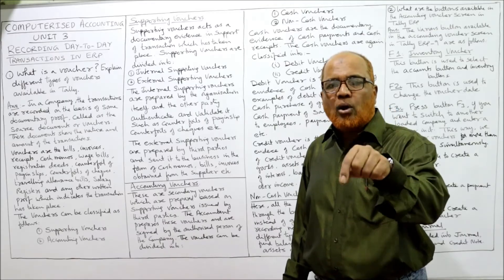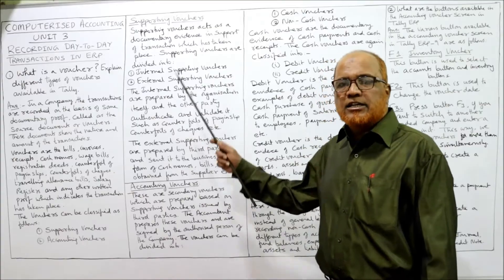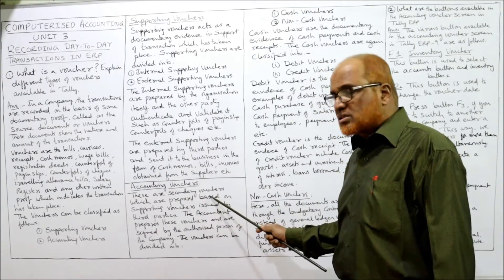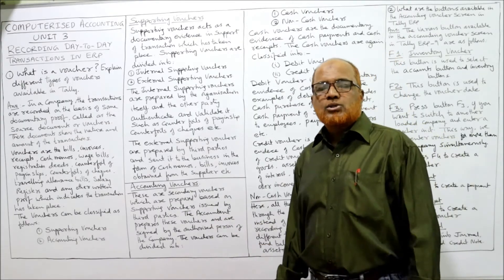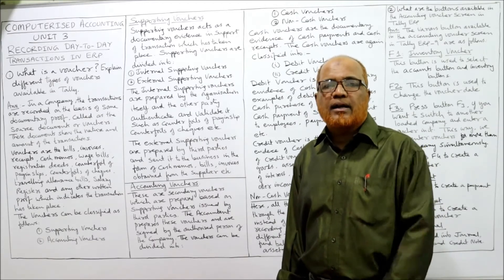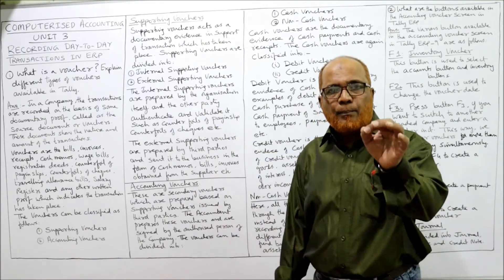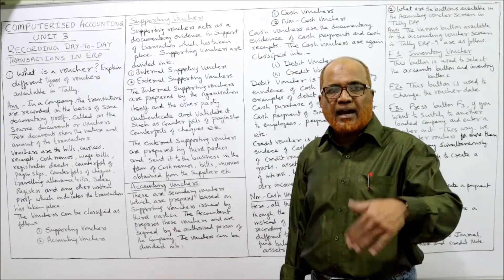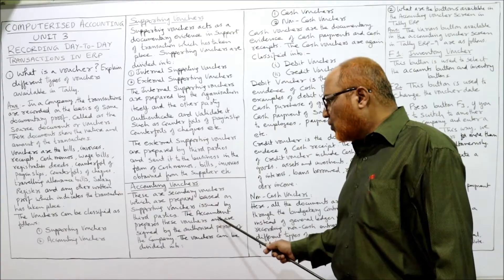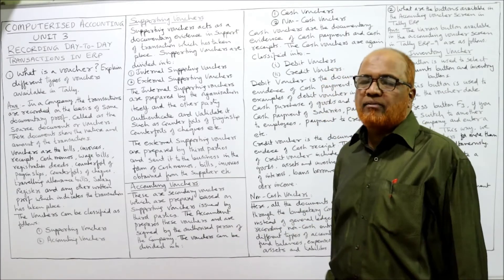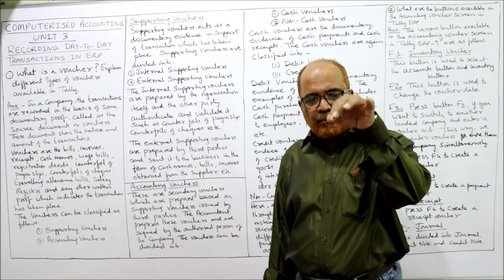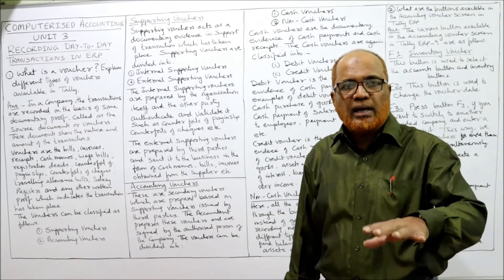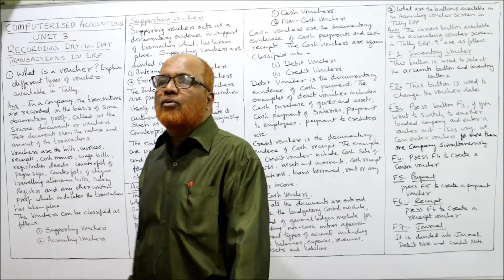Supporting vouchers are the primary documentary proof on which entries are recorded, classified as internal and external. The second type are accounting vouchers. These are secondary vouchers prepared based on supporting vouchers. They are internally prepared by the accountant and are secondary to the supporting vouchers. The accountant prepares these vouchers, and they must be signed and authorized by the authorized person of the company to have validity.